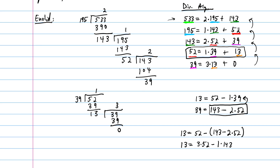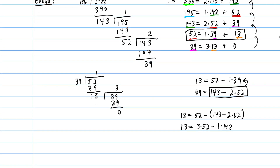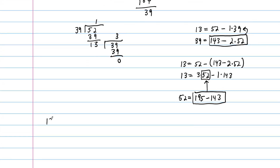Now we go up to the equation where the remainder is 52. Solving for 52: 52 is equal to 195 minus 143. This goes back in for the 52, so: 13 is equal to 3 times (195 minus 143) minus 1 times 143, which gives us 13 is equal to 3 times 195 minus 3 times 143 minus 1 times 143, so 13 is equal to 3 times 195 minus 4 times 143.